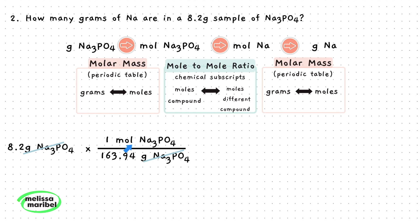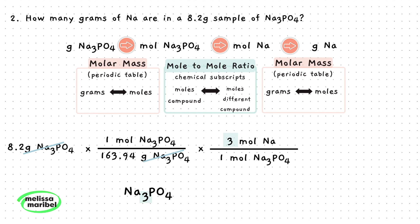Now that we have the moles of sodium phosphate, we need to use a mole to mole ratio to get to moles of sodium. Since there is no balanced chemical equation given, we will use the subscripts in the chemical formula. There are 3 moles of Na for 1 mole of Na₃PO₄. Place the 1 mole of Na₃PO₄ on the bottom to cancel those units out, and place the 3 moles of sodium on top.